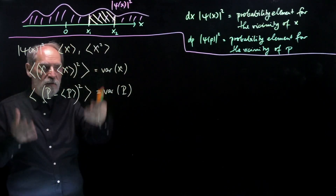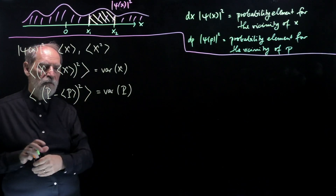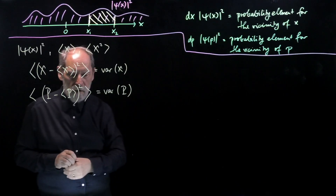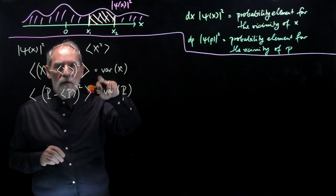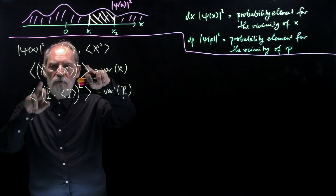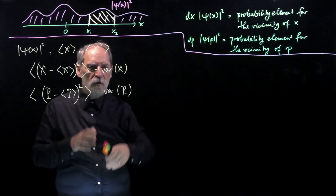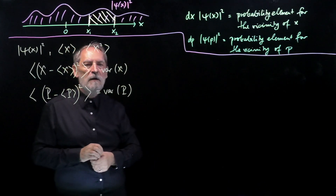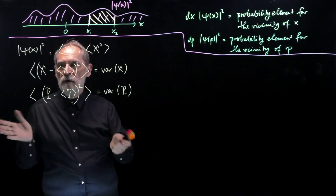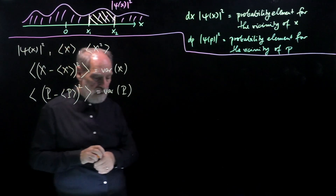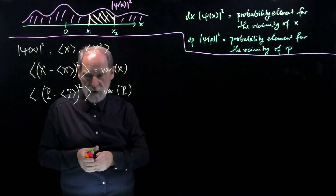In the example we saw before, the expectation value of x and the expectation value of p were both zero, so the variance of x and the variance of p were just equal to the expectation value of x squared and the expectation value of p squared. We saw that their product equaled a certain number and was independent of the width of the distribution characterized by the parameter. But that's a very special case.